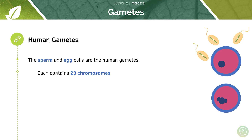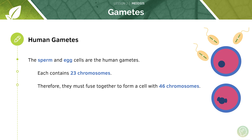The sperm and egg cells are the human gametes. Each contains 23 chromosomes. When they fuse together, the fertilised egg will have 23 plus 23 equals 46 chromosomes. This is our full diploid cell, which is exactly what we want, because these gametes were haploid — they only contained 23 chromosomes, one set of chromosomes — and when the sperm and egg fuse we create the diploid cell.